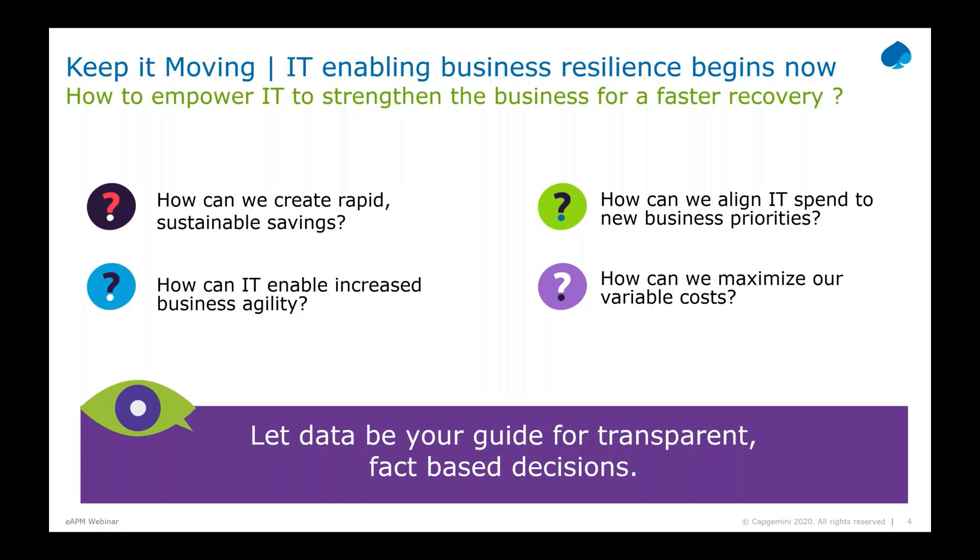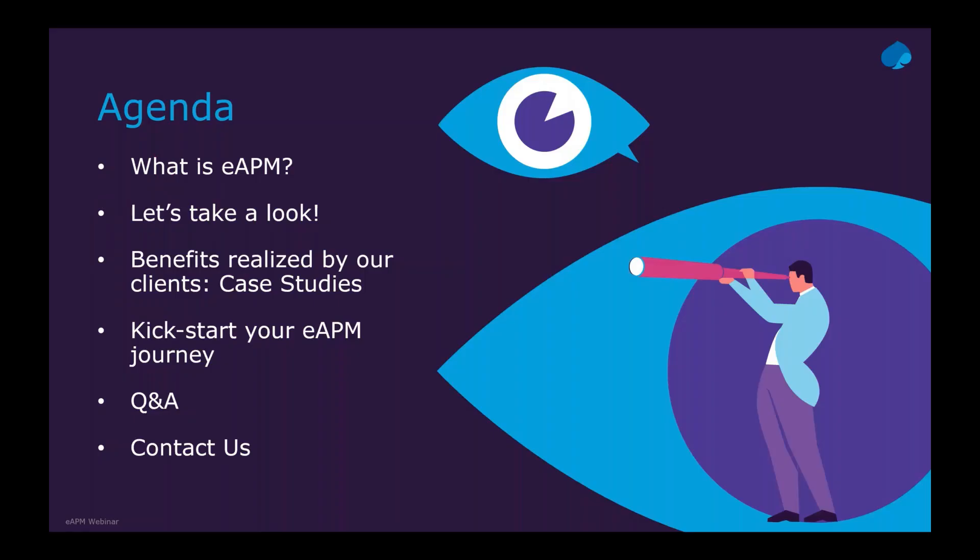This webinar will hopefully answer questions like: How do we create rapid sustainable savings? How can we align IT spend to new business priorities? How can IT enable increased business agility? How can we maximize our variable cost? Without further ado, I leave the word to Philip to explain what EAPM is and go through the demo.